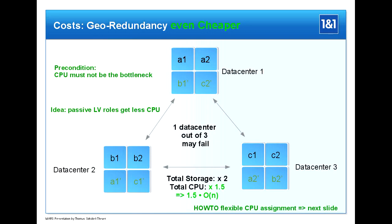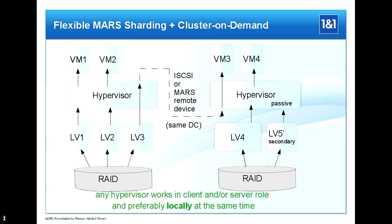Here's another example where you can get geo-redundancy even cheaper. The idea is to partition your primary sites — the bold ones are the primaries and the secondaries are distributed across three data centers. The model is: one data center out of three may fail. You commission CPU power only for the primaries and compensate for the failure of one of three, giving you only a factor of 1.5 overhead. The tradeoff is you may need more flexible CPU assignment.